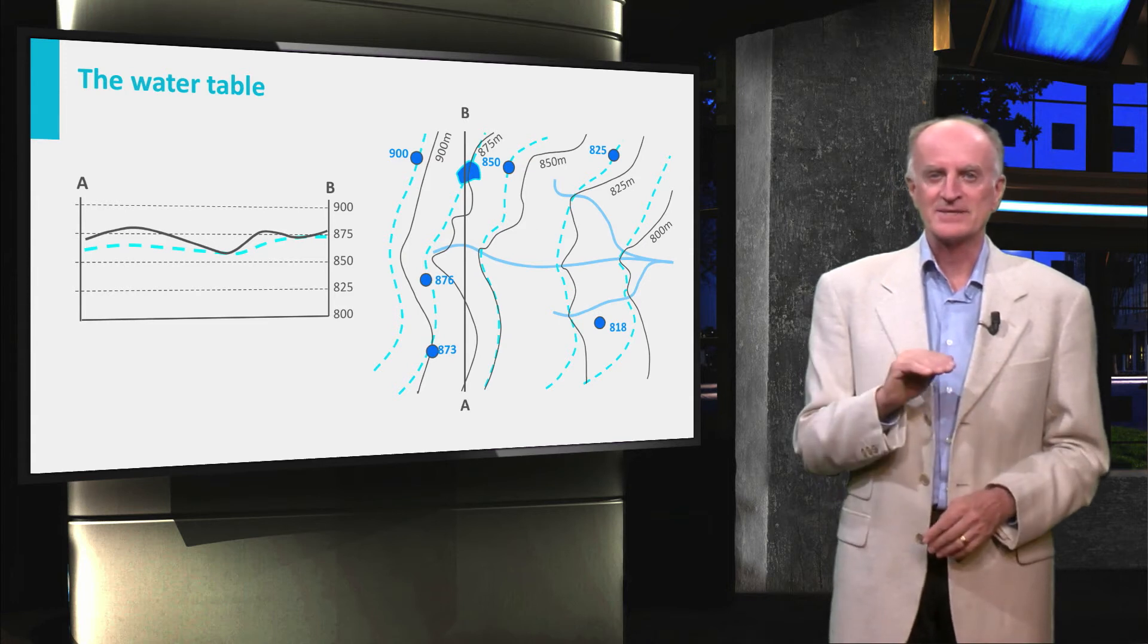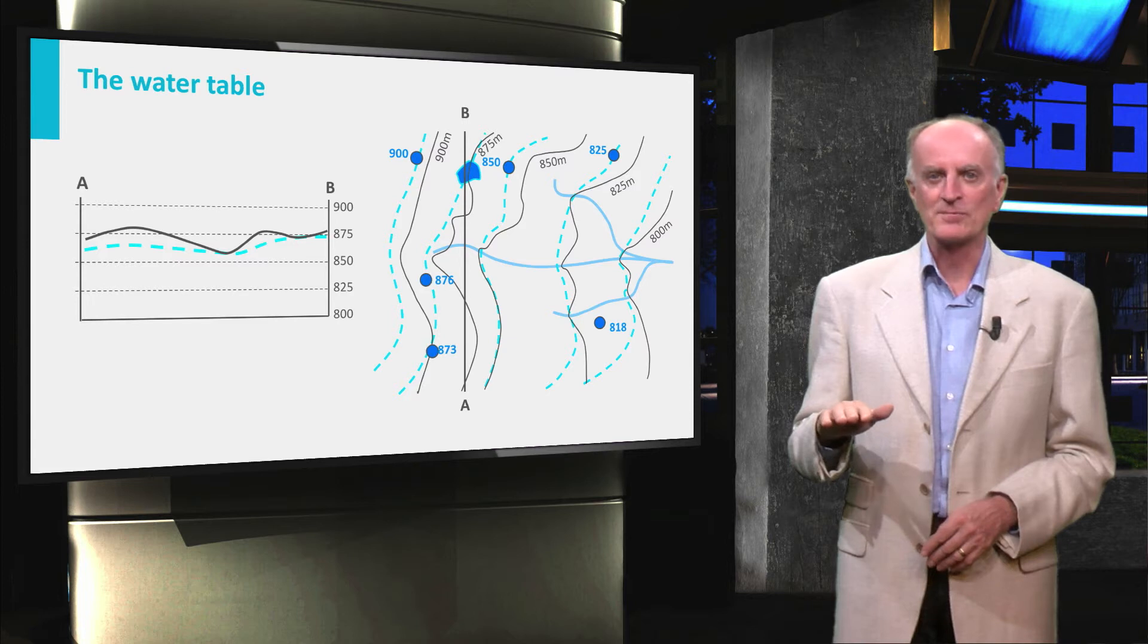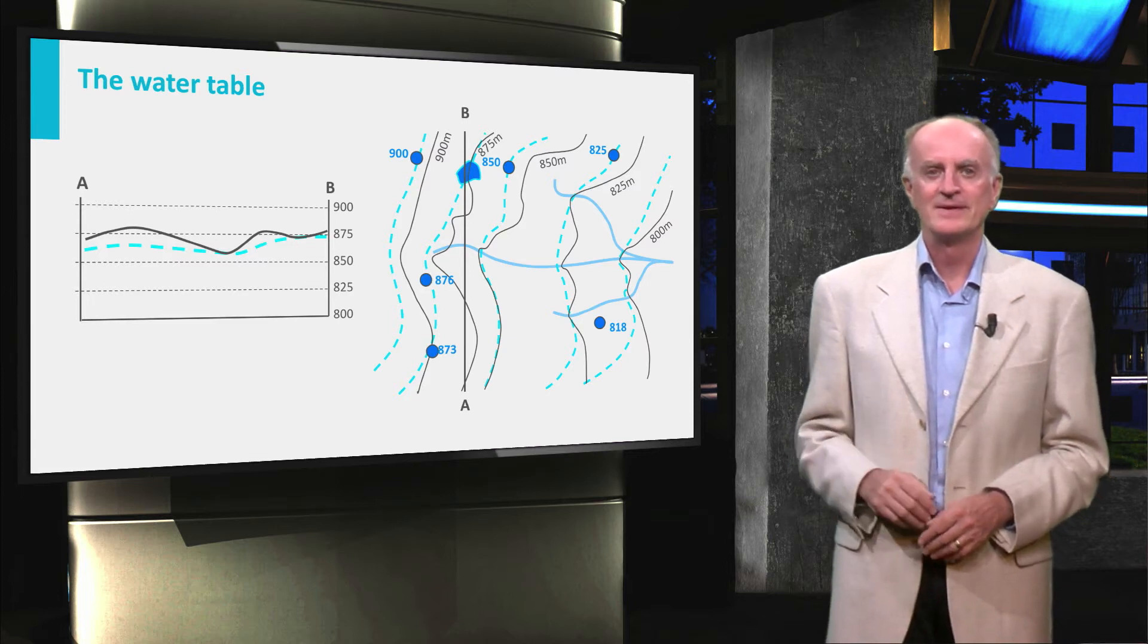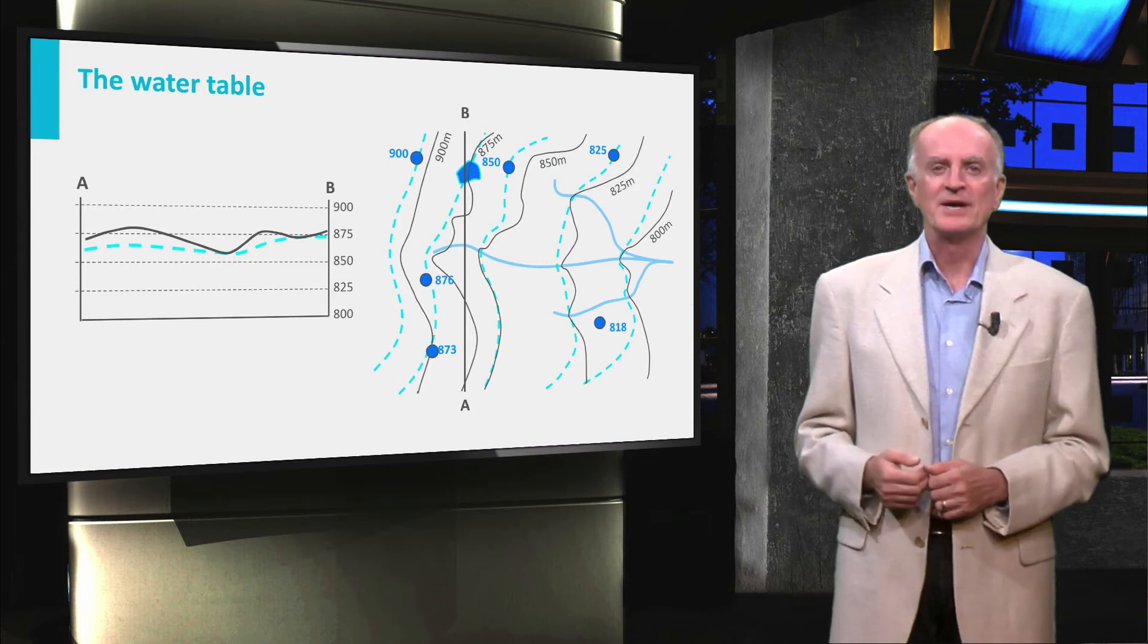The water table intersects the surface at the river floor and in correspondence with the small lake on the right-hand side of the profile. We conclude that these water bodies are partly fed by the unconfined aquifer.